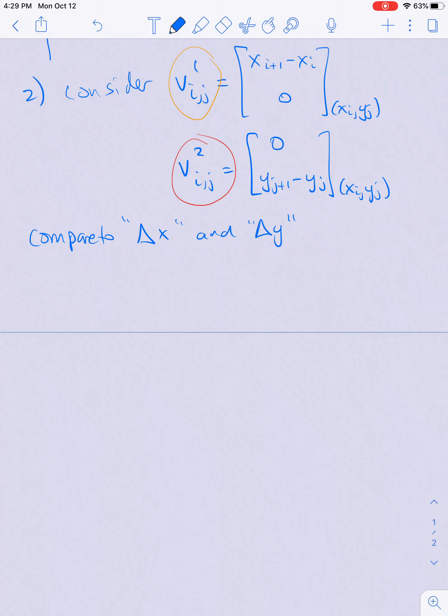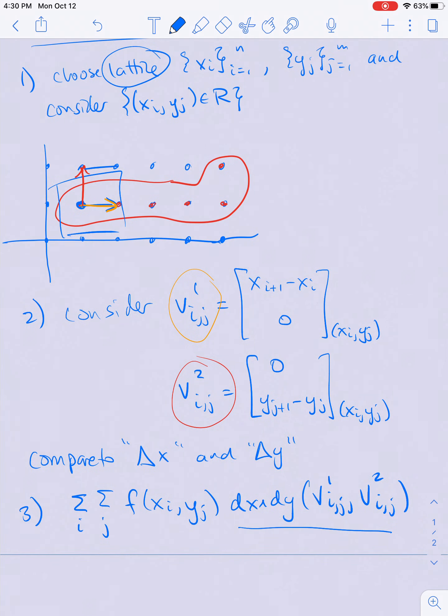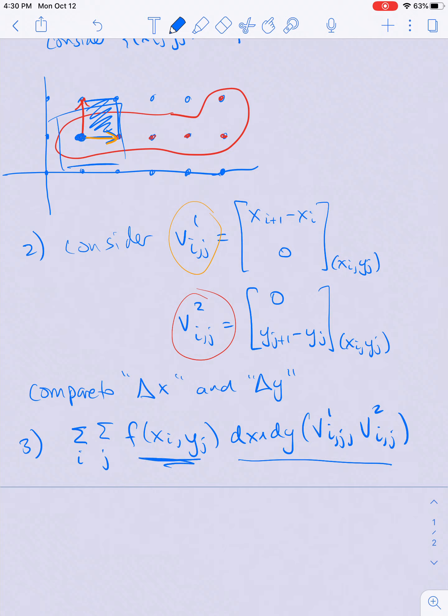Then we're going to sum over i and sum over j: f at the point (x_i, y_j) times the value of the volume form dx∧dy on the pair (v₁_{ij}, v₂_{ij}). This volume form is eating these two vectors and spitting out the area of this square, then I'm multiplying by the value that the function takes at that point.